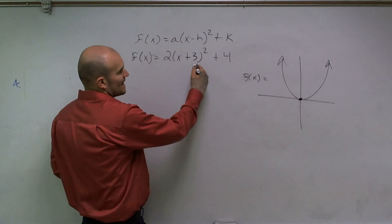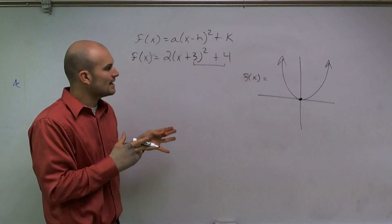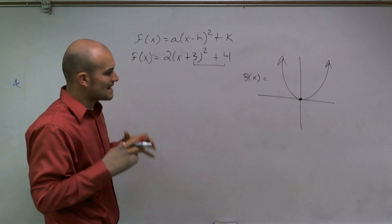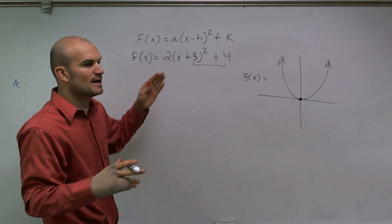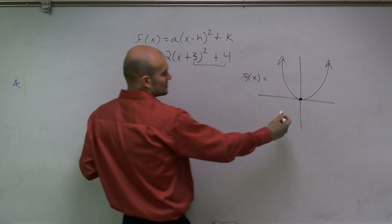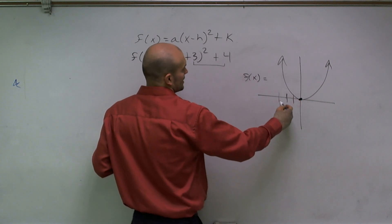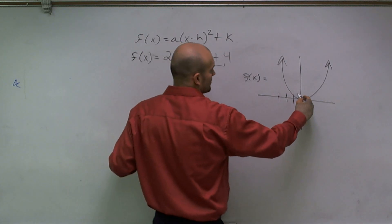Well, what happens is I have these two transformations, so that's going to shift my vertex. So what I'm going to do is I'm going to first determine where my new vertex is, and then I'll determine how it's going to be stretched or compressed. So this positive 3 is going to tell me I'm going to shift my graph three units to the left. Then this 4 tells me I'm going to shift my graph four units up.